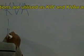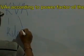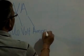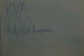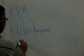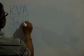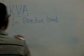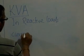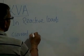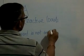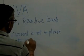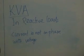KVA means K for kilo, V for volt, A for amps. In an active load, the current is not in phase with the voltage.